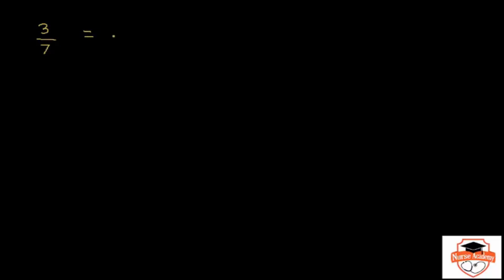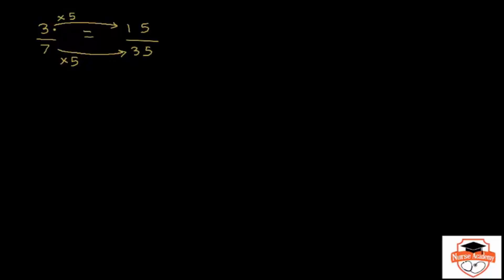Similarly, if I were to ask you: three over seven is equal to 15 over a number — can you find this number? It's pretty much the same thing. You relate 3 with 15, because the numerators are given. You know that 3 times 5 is 15, therefore the denominator 7 also needs to be multiplied with 5 to keep the fractions equivalent. Therefore 7 times 5 is 35. So three sevenths is equivalent to 15 thirty-fifths.